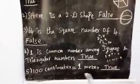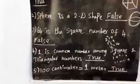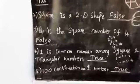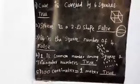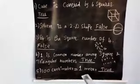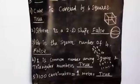Fifth statement: 100 centimeters equal to one meter. That is the formula. So 100 centimeters equal to one meter. True.